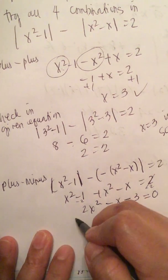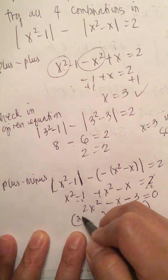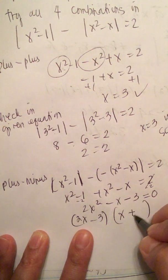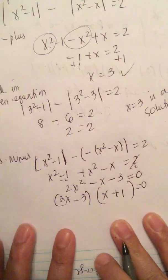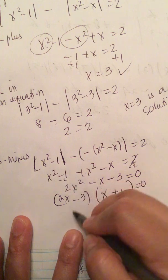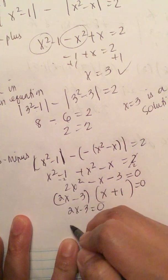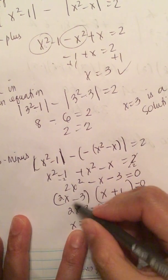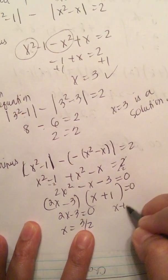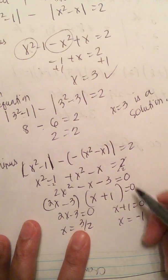We factor this: we get 2x minus 3 times x plus 1 equals 0. Solving each factor, we get 2x minus 3 equals 0, so x is equal to 3 over 2; or x plus 1 equals 0, so x is minus 1.